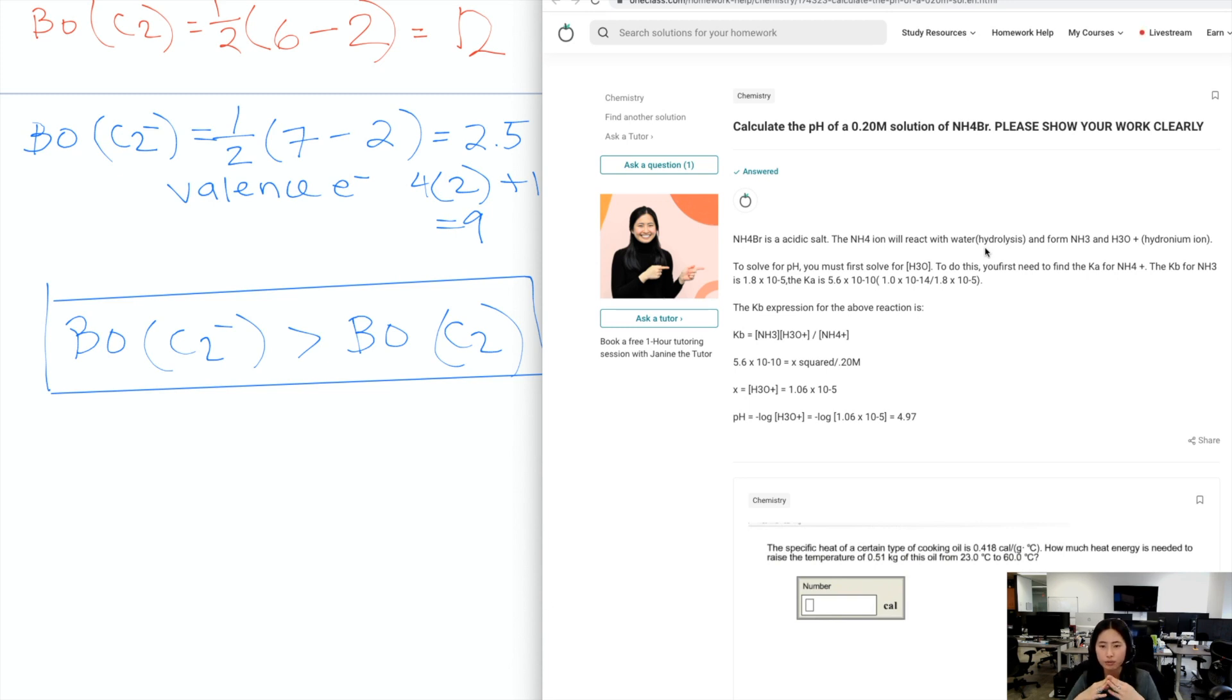And it says before you can actually solve for the pH, you need to first figure out what the concentration is of H3O+. There should be a plus here. And in order for you to do that, you need to find the Ka of NH4+, which is the ammonium ion. And if you do have the Kb expression, this is where things switch from Ka to Kb.